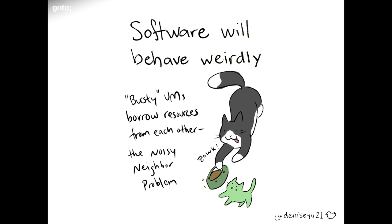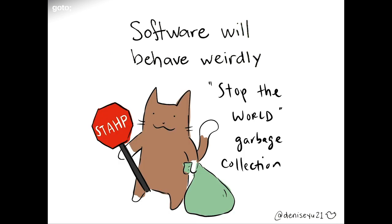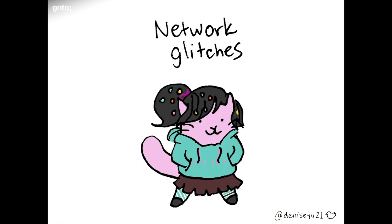In multi-tenant servers, bursty processes will yoink resources from other processes — things can slow down and look like there's a partition event. This is the noisy neighbor problem in multi-tenant computing. Some languages like Golang implement stop-the-world garbage collection: you ran out of memory, need to do something about it — this causes things to suspend, which can look like a disconnection. And network glitches, of course, randomly happen.